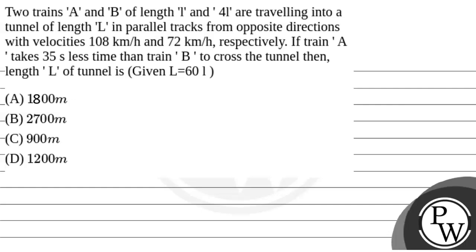The question given is: two trains A and B of length L and 4L are travelling into a tunnel of length capital L in parallel tracks from opposite directions, with velocities 108 km per hour and 72 km per hour. If train A takes 35 seconds less time than train B to cross the tunnel, then the length of L — that is, the tunnel — will be what? It is given that capital L equals 60 times small L.